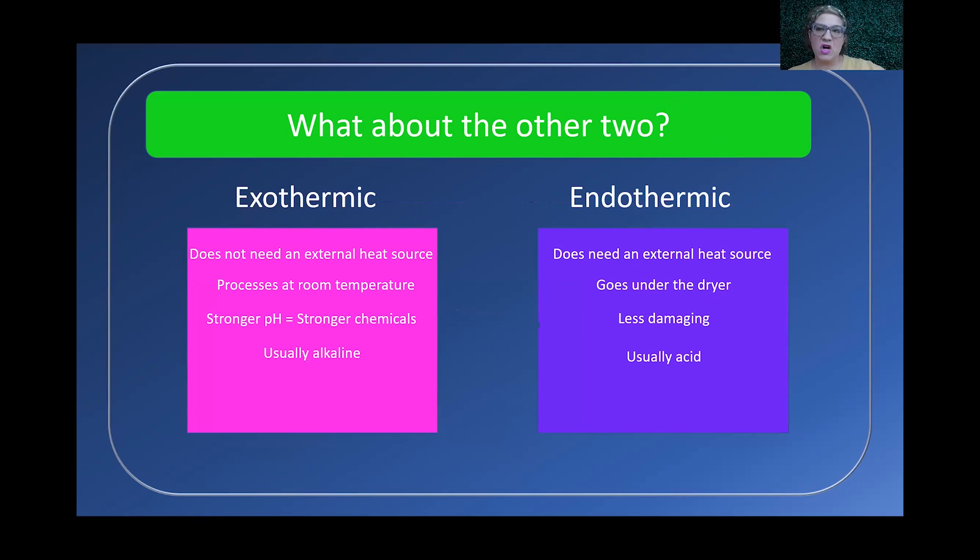There's two more terms that you really need to know as you're studying for your state boards for perms: exothermic and endothermic. Here's some of the differences between the two. An exothermic perm does not need an external heat source. Most of your alkaline perms are exothermic perms. You can wrap a perm, use an exothermic waving solution of some sort, and your client can sit at room temperature. Whereas an endothermic perm does need a heat source. Endothermic perms are typically acid. They're not nearly as strong. They usually cannot process at room temperature. They usually have to go under the dryer. So the exothermic perm tends to have a stronger pH, stronger chemicals, while the endothermic perm is much less damaging. It has much softer chemicals. Exothermic perm is usually alkaline, an endothermic perm is usually acid.